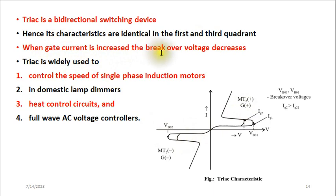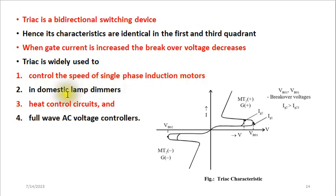When the gate current is increased, the break-over voltage decreases — so if you want to trigger the TRIAC at a lower voltage, increase the gate current. The TRIAC is used in many applications: controlling the speed of single-phase induction motors, domestic lamp dimmers, heat control circuits, and full-wave AC voltage controllers.